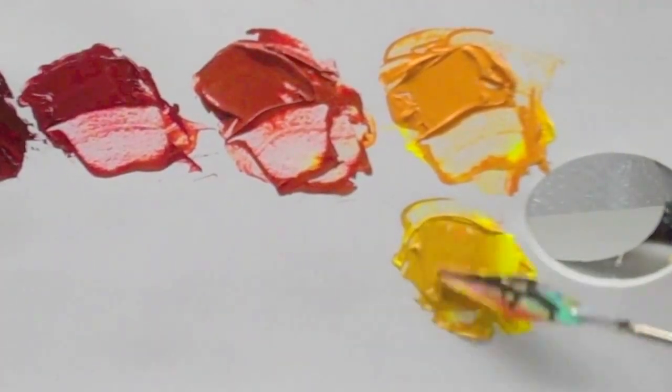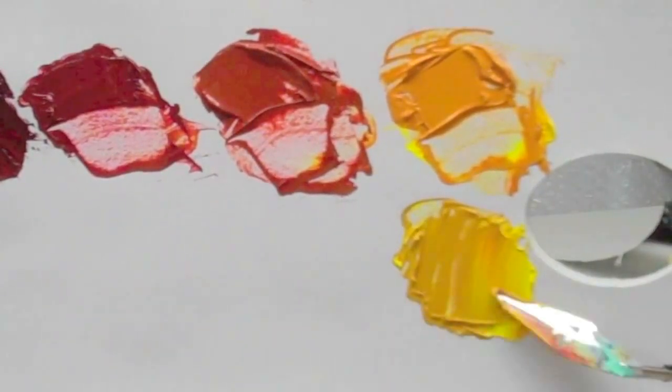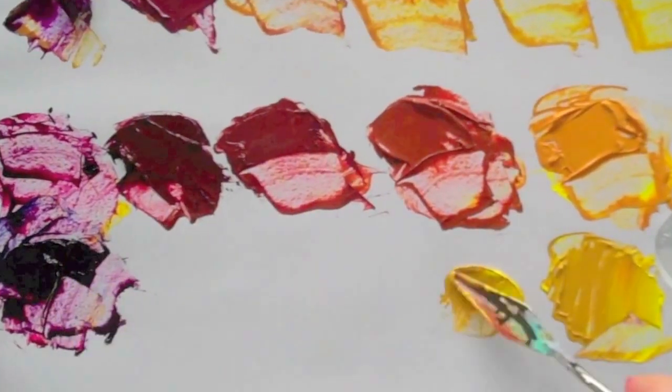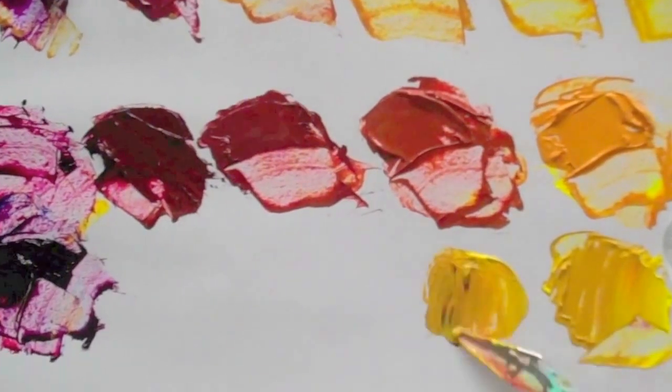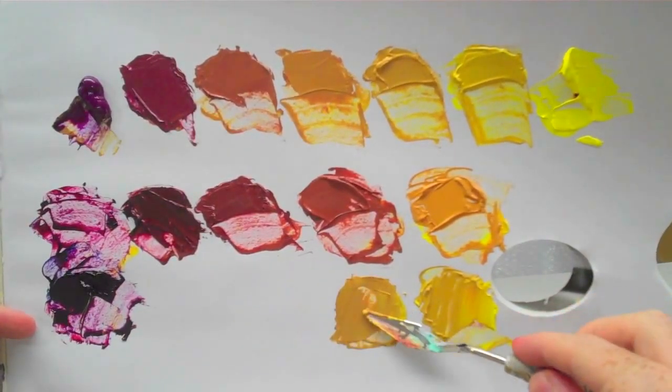Often when you're first starting to paint, a good way to understand pigments and how they work is to use a separate red and a separate blue to mix your purples, rather than relying on a pre-mixed purple.